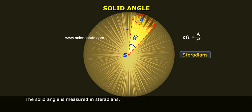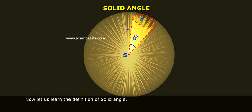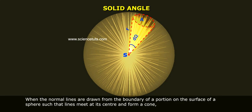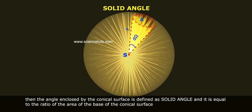Now let us learn the definition of solid angle. When the normal lines are drawn from the boundary of a portion on the surface of a sphere such that lines meet at its center and form a cone, then the angle enclosed by the conical surface is defined as solid angle, and it is equal to the ratio of the area of the base of the conical surface to the square of the radius of the sphere.